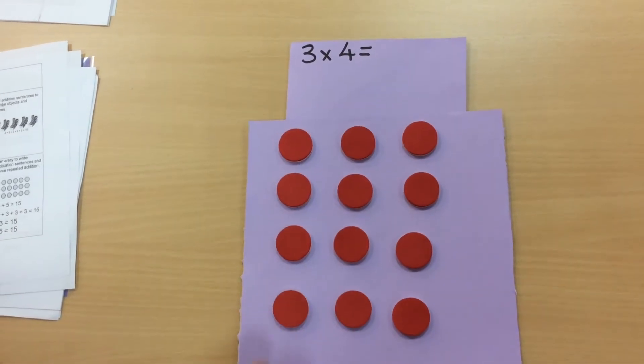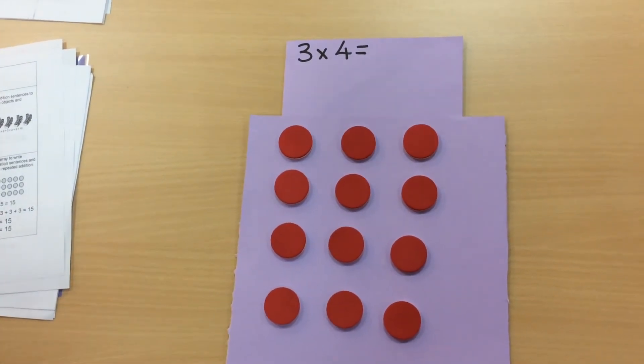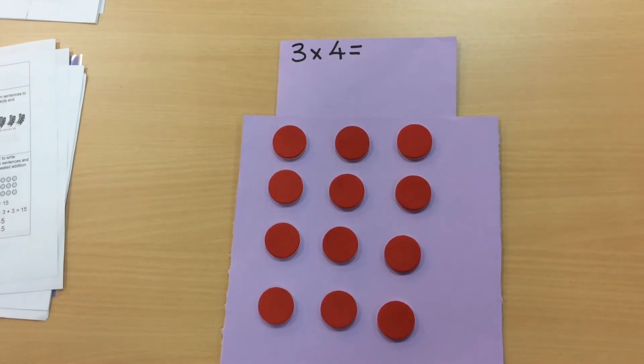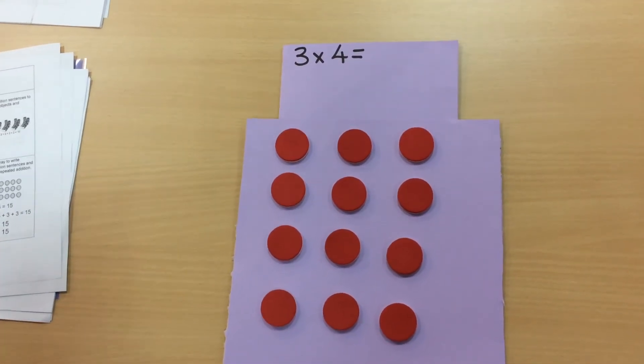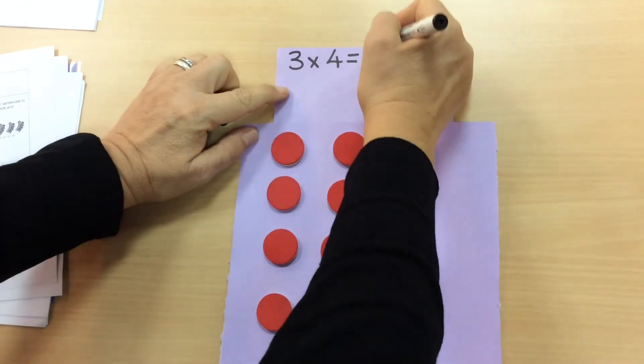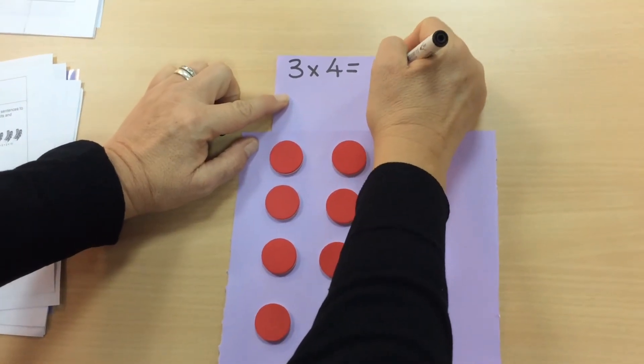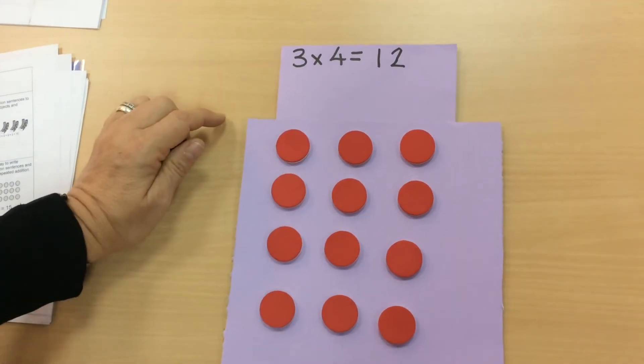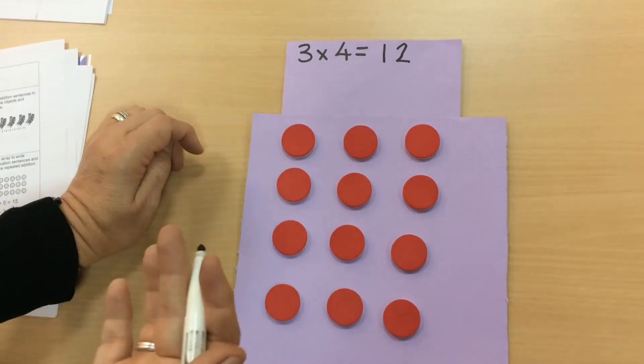We've got three lots of four. If children aren't sure of the multiplication and can't count in threes or fours, they can count each individual counter. If they did that, they'll see they actually have 12 counters. Like I said before, we can turn it around because it is a commutative law.